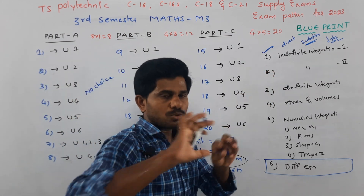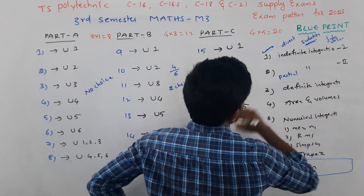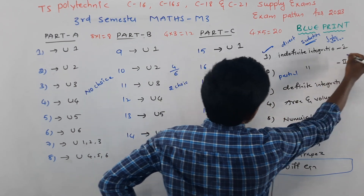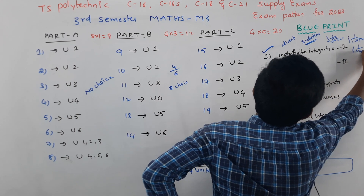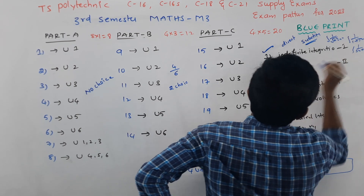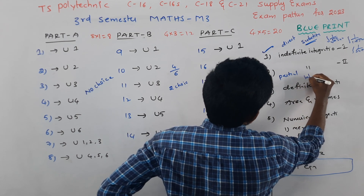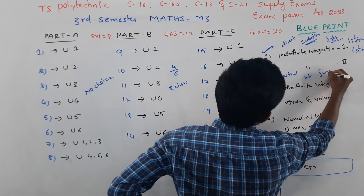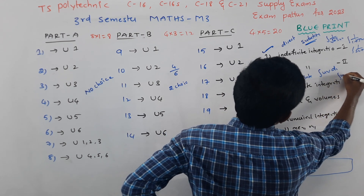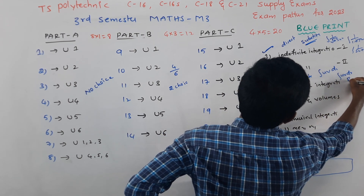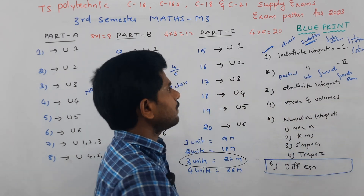In Unit 2, there are partial fraction questions and special methods. This includes problems of the type 1/(1 + tan x) and 1/(sin x + cos x). Also covered are partial fractions and integration by parts using the UV method.